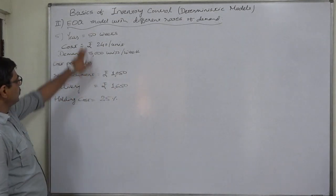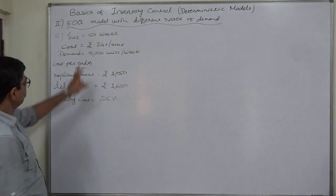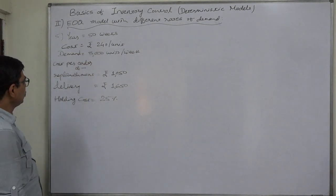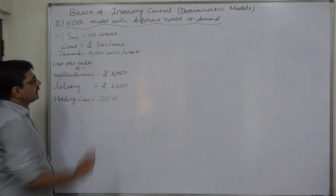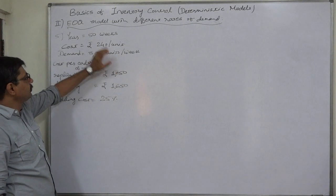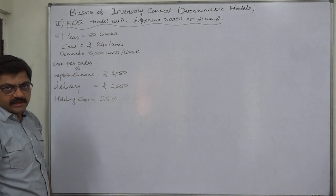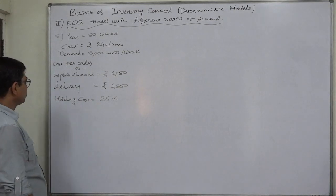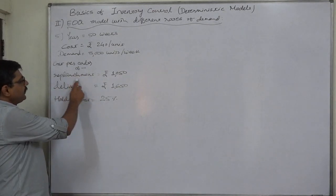The summary of the question is: a year is made up of 50 weeks, cost from the supplier is rupees 240 per unit, demand is 8,000 units per week. So we have to multiply this 8,000 units by 50 weeks so that the annual demand will come to 4 lakh or 400,000 units. Cost per order of replenishment is 1,050 and delivery is 1,650.